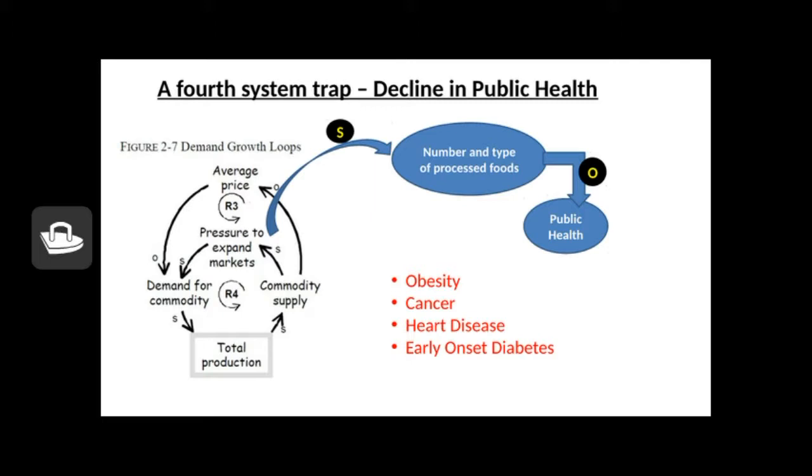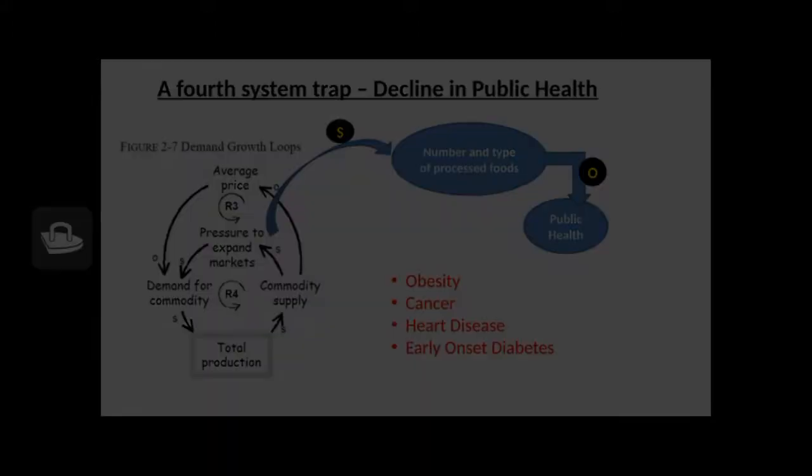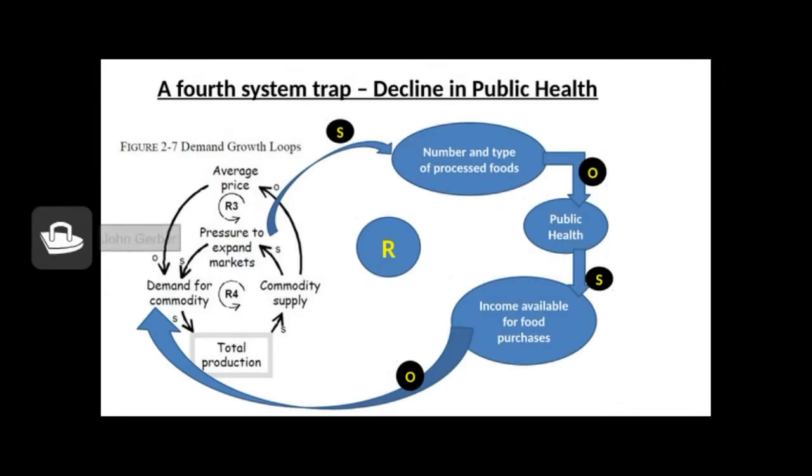They suggested, as commodity supply increases, the number and type of processed foods as compared to fresh foods increases. As processed foods increase, public health goes down, resulting in obesity, cancer, heart disease, diabetes, and early onset diabetes. The food we eat in this country is generally cheap, processed, and easily available, and not always good for us.